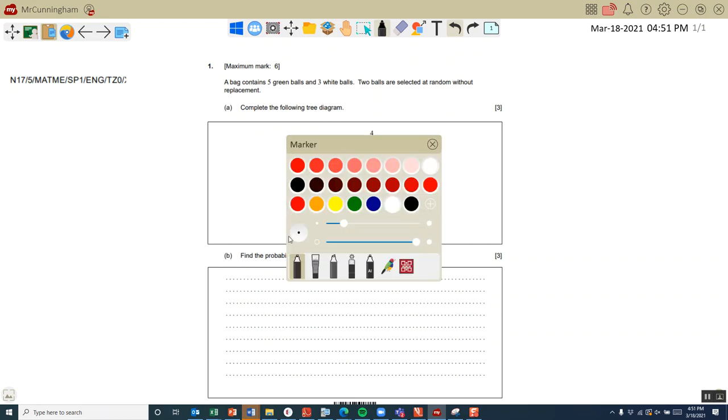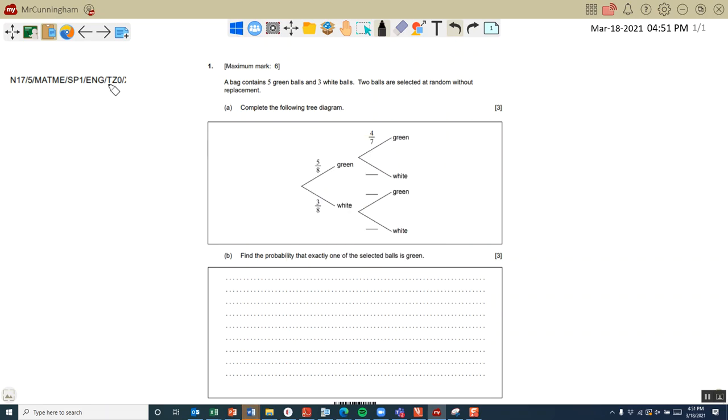This is question one from the November 2017 Standard Level Paper One. It's a probability question. We have five green balls and three white balls. Two balls are selected at random without replacement. Copy and complete the diagram.